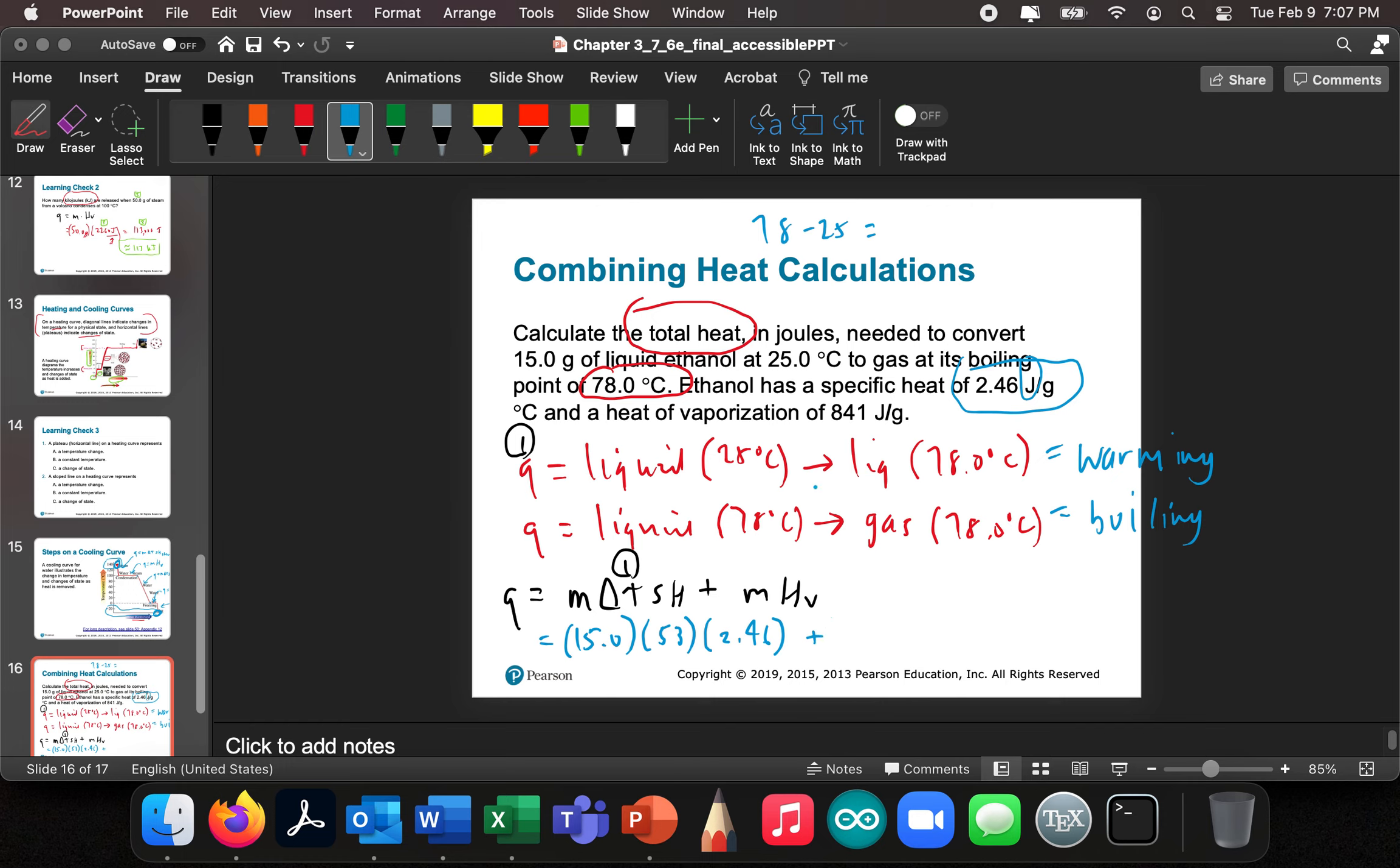All right, now I'm going to do that and say the mass is 15.0, and the heat of vaporization is 841 joules per. I haven't really left myself enough room here for this, but I'm going to put this all in my calculator, you should do the same thing, times 15 times 53 times specific heat 2.46 plus 15 times 841. And that gives me 14,570.7 joules.